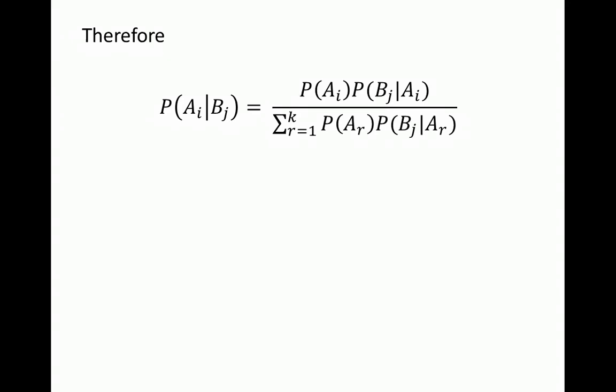Therefore, we have just shown that the conditional probability of Ai given Bj equals the probability of Ai times the conditional probability of Bj given Ai in the numerator, and in the denominator we have a summation based on the multiplication rule, summing over all the first stage outcomes.